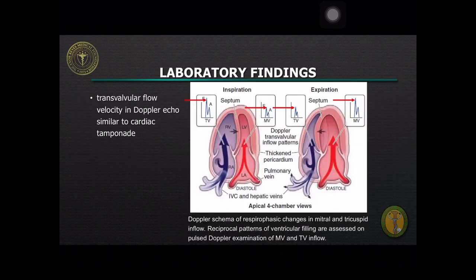The transvalvular flow velocity in Doppler echo is similar to cardiac tamponade. During inspiration, there is an exaggerated reduction of flow velocity in the pulmonary veins and across the mitral valve and a leftward shift of the ventricular septum. During expiration, the opposite occurs — diastolic flow velocity in the inferior vena cava into the right atrium and across the tricuspid valve increases in an exaggerated manner during inspiration and declines during expiration.